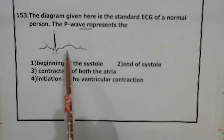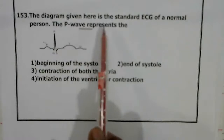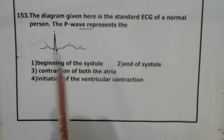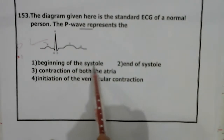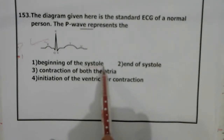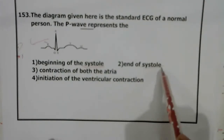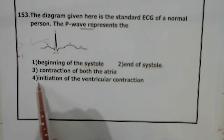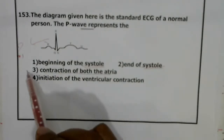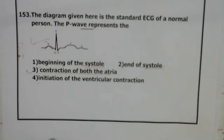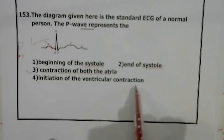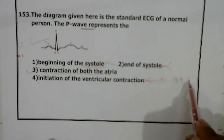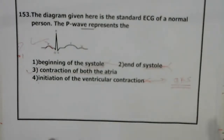Question 153: ECG diagram. What does the P wave mean? 'Beginning of systole' and 'End of systole' — neither specifies atrial or ventricular. 'Initiation of contraction of both atria' — this is correct; P wave occurs when there is contraction of the atria. 'Initiation of ventricular contraction' — this is incorrect, because ventricular contraction is marked by the QRS complex, not the P wave.